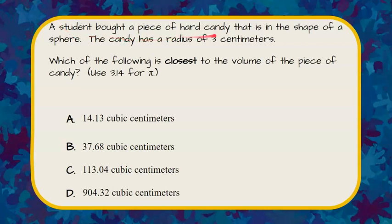A student bought a piece of hard candy that is in the shape of a sphere. The candy has a radius of 3 centimeters. Which of the following is closest to the volume of the piece of candy? Use 3.14 for pi.